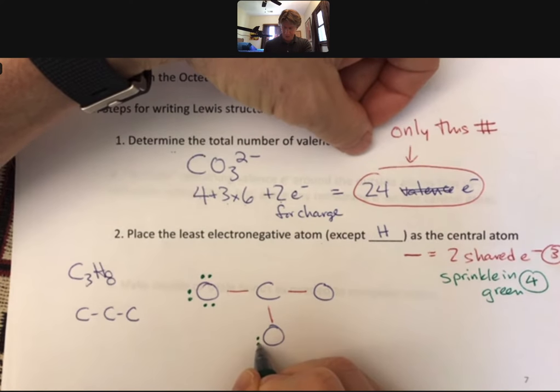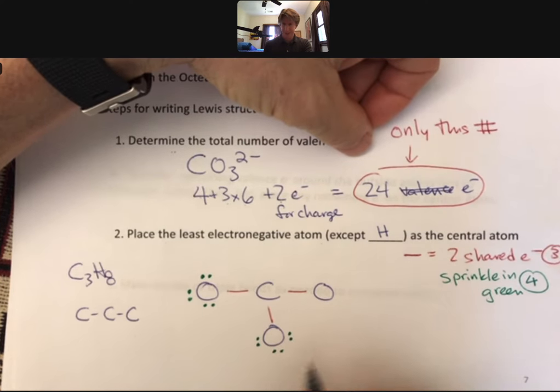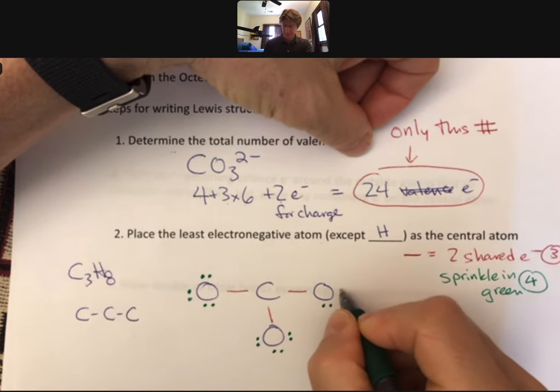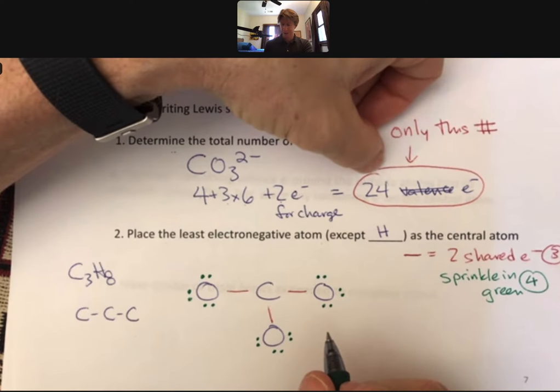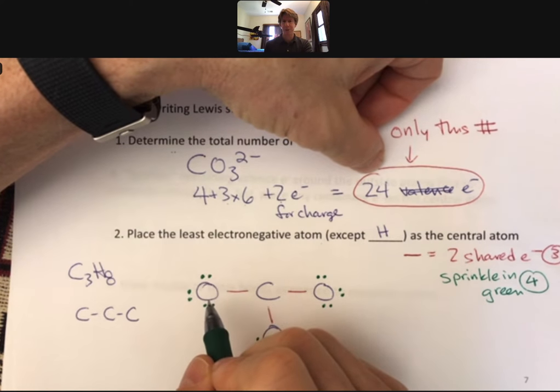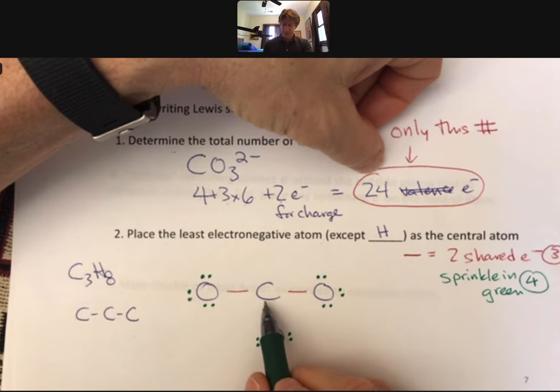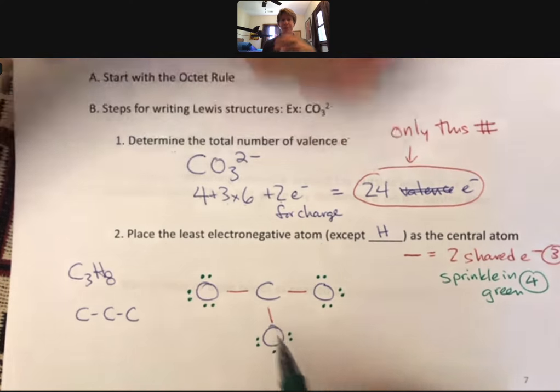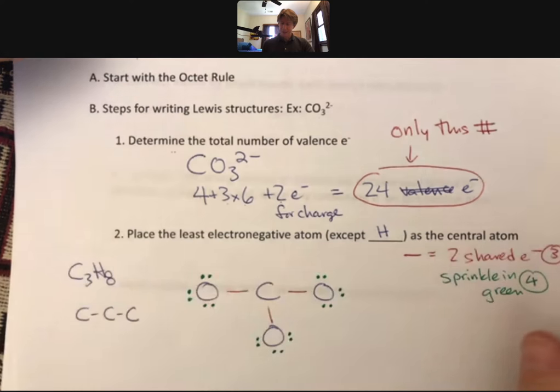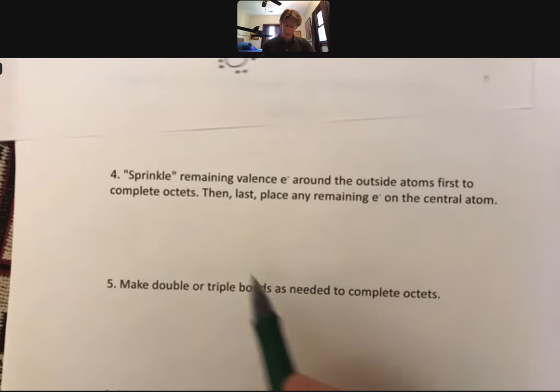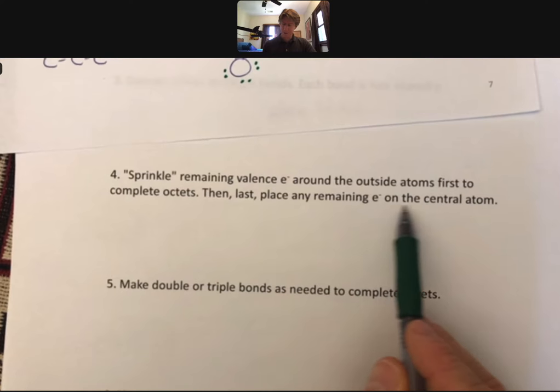So now I have 14. I have 16. I have 18. And now this oxygen has an octet. 20, 22, 24. I have 24 electrons total to use. I have 24 electrons in here already. I see that this carbon does not have an octet. If I were to count up the number of electrons in this carbon, right, that this carbon has a share of, or as part of its octet, I'd be two, four, six, but not eight. Let's check in with step four again. Step four says, then last, place any remaining electrons on the central atom.